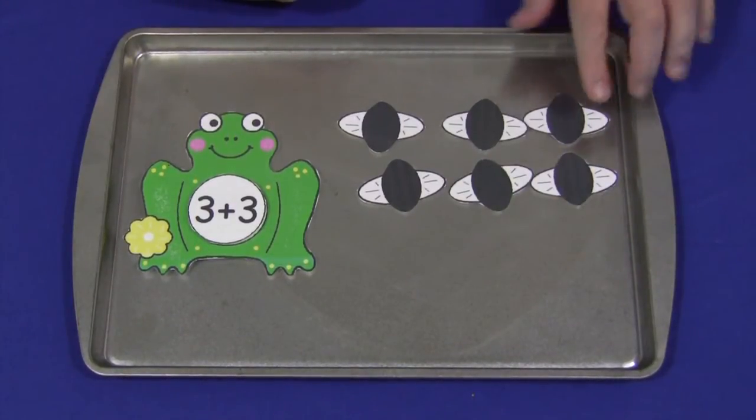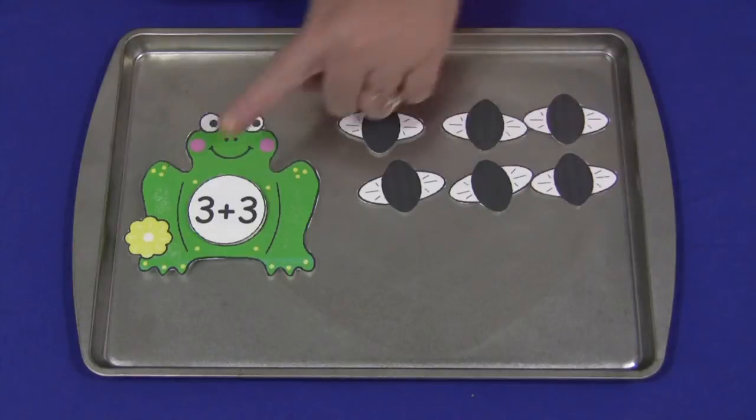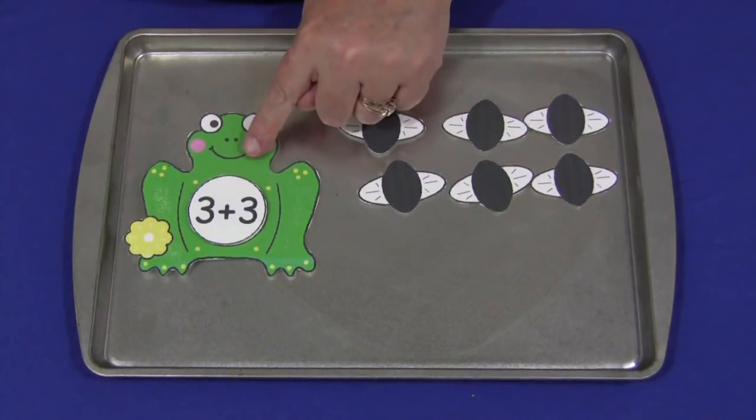Three flies and three more flies. And they would count the number of flies, and that'd be one, two, three, four, five, six. So the answer to three plus three is six.